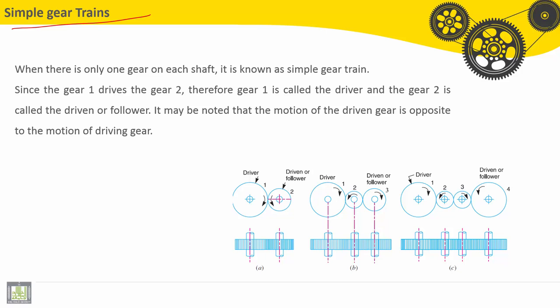When there is only one gear on each shaft, it is known as Simple Gear Train. You can see here on each shaft we have one gear. One gear on each shaft. This is called a Simple Gear Train.